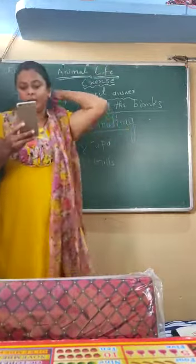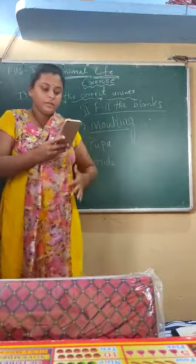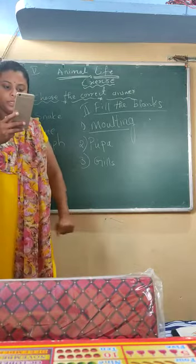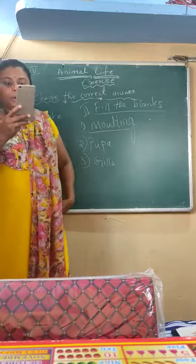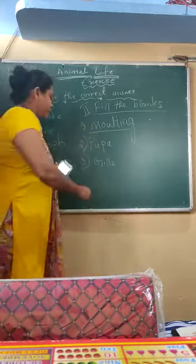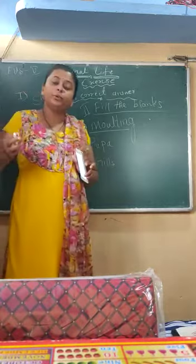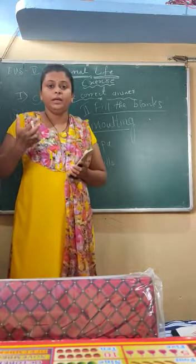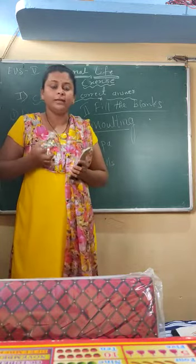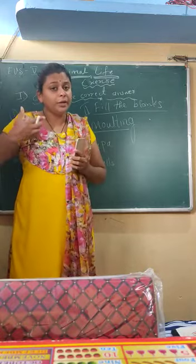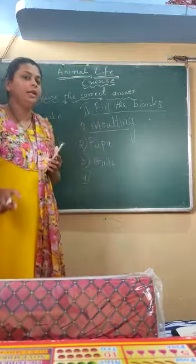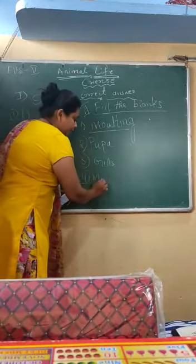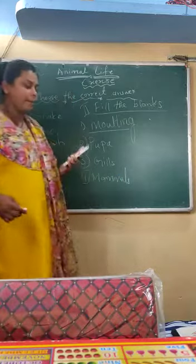Hi children, welcome back. In the last video we solved exercise part one. In this video we are going to continue from the second section. The fourth question is: animals that produce milk to feed their young ones are called as what? The group of animals which produce milk within their body — like monkey, human being, tiger, and lion — the animals which give birth to babies directly are called as mammals.